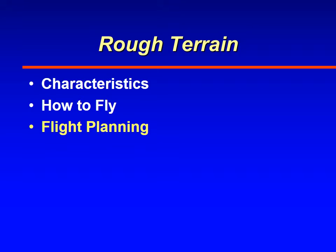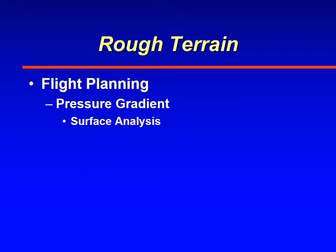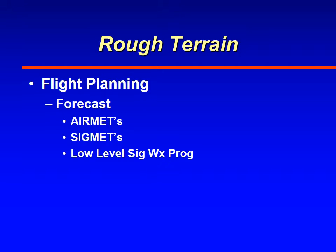That's a little bit about rough terrain flight planning. Things you look for: wind speed, strong winds and direction — try and visualize the winds over the ground. You can also look at the surface chart to get a general pattern of wind flow over a region. Pilot reports are invaluable, and this type of turbulence is forecasted — you'll see the forecast in AIRMETs, SIGMETs, and the low-level significant weather prognostic charts.